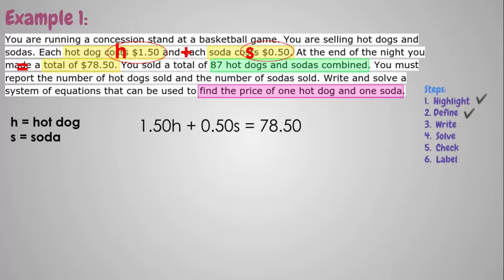Now the only other number in this problem that we know is 87 hot dogs and sodas combined. So that means we don't know which is which, how many of each, but we do know that there was a combined total of 87, which means our second equation is going to be adding our two variables, h and s, and setting it equal to 87. So now we wrote our equations. It is time to solve them.